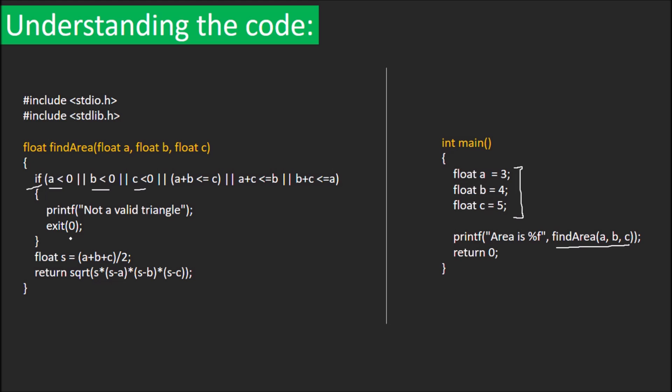If all the properties of a triangle are satisfied, we store the semi-perimeter (a+b+c)/2 in s, then apply Heron's formula to calculate and return the area of the triangle.